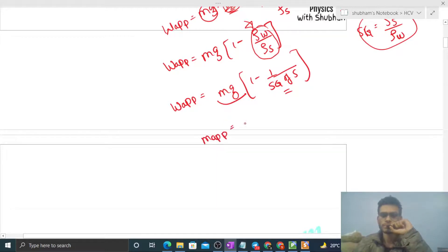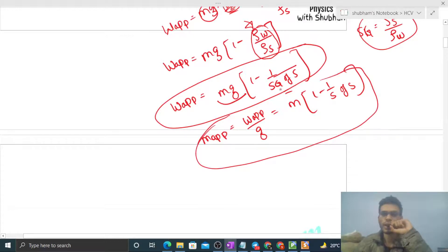So apparent weight is actual weight into 1 minus 1 upon specific gravity of solid. From here you can also calculate apparent mass, that is apparent weight divided by g, which gives m times 1 minus 1 upon specific gravity of solid. Actually these formulae are directly given in books, and in questions we use them directly to save time. You can remember these formulae.